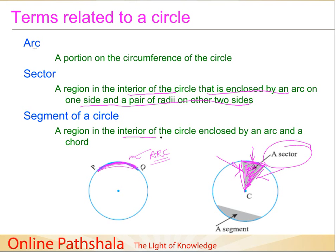Similarly, we can also have a segment. A segment is a region in the interior of a circle enclosed by an arc and a chord. You can see there is a chord here and then an arc, and the portion between them is a segment within a circle. Those were the terms related to the circle and our discussion on circles. See you soon in the next session.